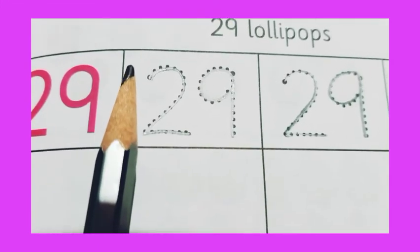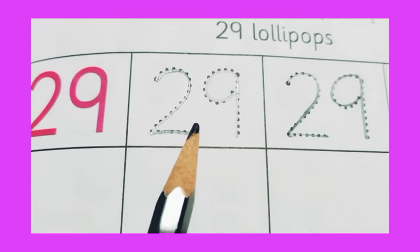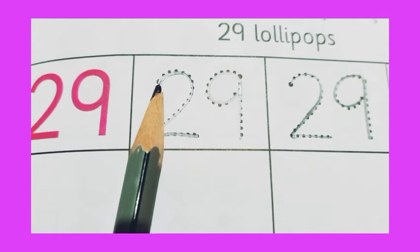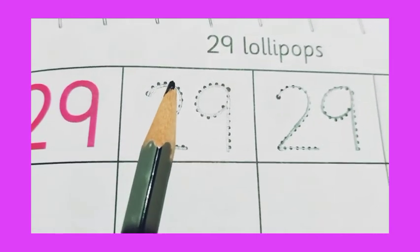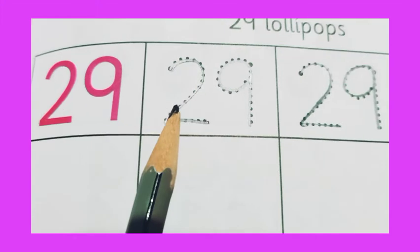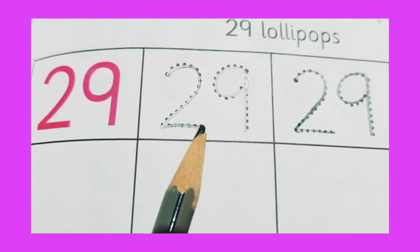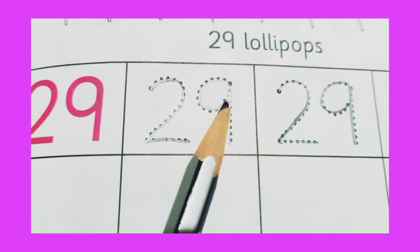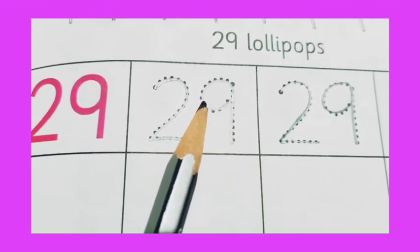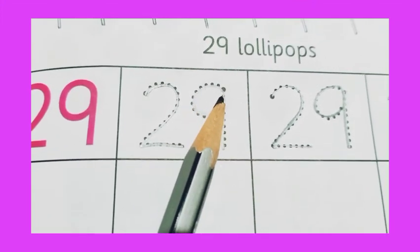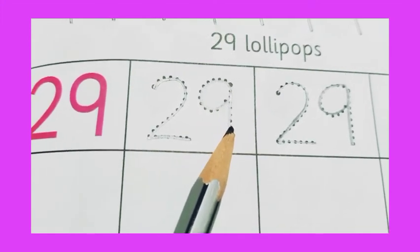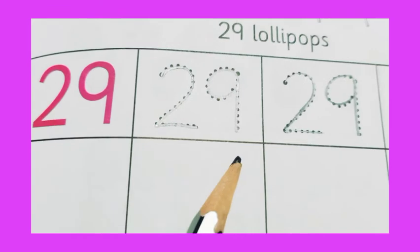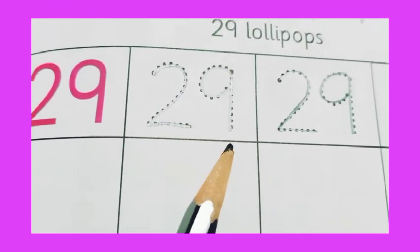First number is number 29. So let's start writing. First of all, we draw a curl, join one slanting line and join one slipping line. This becomes our 2. Then we draw a circle and join one standing line. So this becomes our 9. So 2, 9 together becomes what? 29. 2, 9, 29.